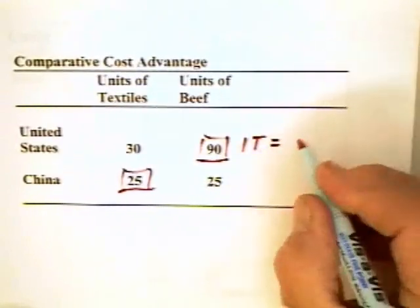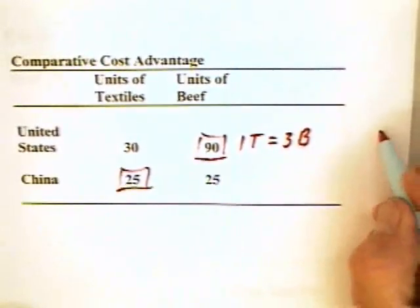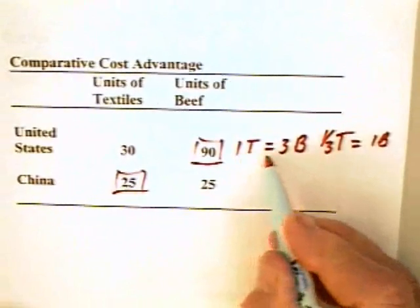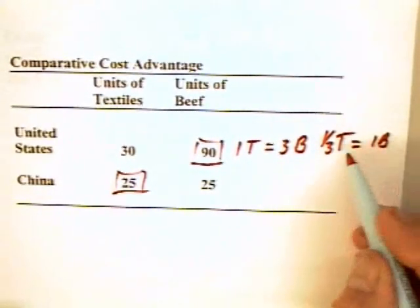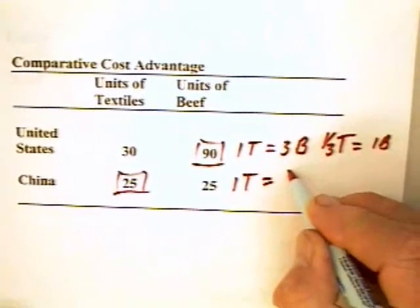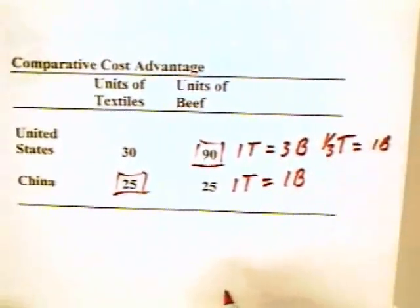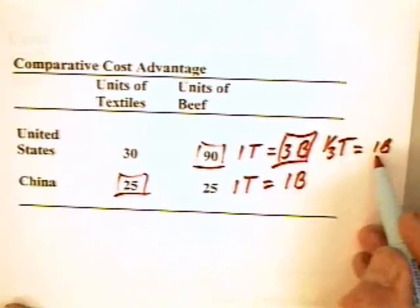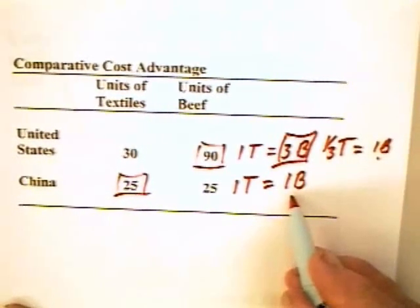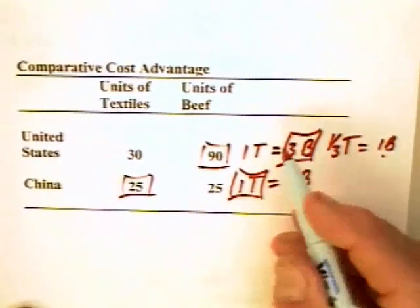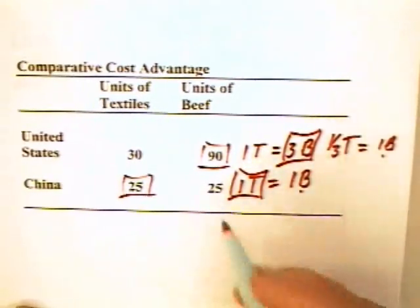We can see this in terms of cost ratios. One textile in the United States is equal to three beef, and one beef in the United States is equal to one-third textiles. If the United States produces a textile, it gives up three beef; if it produces a beef, it gives up one-third textiles. China, on the other hand, produces one textile with the same resources as it produces one beef, so the ratio is one-to-one either way. Beef production is less costly to the United States, since it gives up only one-third textiles to produce a beef. China gives up one beef in order to produce a textile.